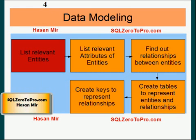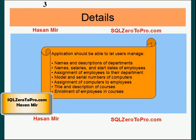So what are the things of importance here? We are managing names and descriptions of departments, so department is a thing of importance. Another thing of importance is employees. Another thing of importance is computers, and also courses. The rest of the things like model and serial numbers are attributes of the computer, but the computer itself is a thing of importance. Similarly, name and description are not things of importance — the thing of importance is the department itself; name and description are attributes of the department. Likewise, employee is the thing of importance, and names, salaries, and start dates are attributes of the employees.